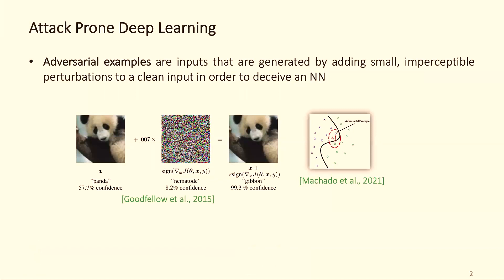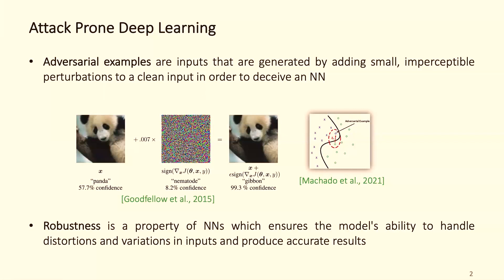I think all of you have seen this image many times from Goodfellow's seminal work. If you have an image classification neural network with just a very unnoticeable perturbation, you can force the classifier to misclassify the image, in this case a panda to a gibbon. The robustness property is that a neural network should be able to handle this type of perturbation and distortion, so we still want this to be classified as panda.